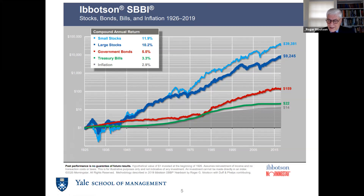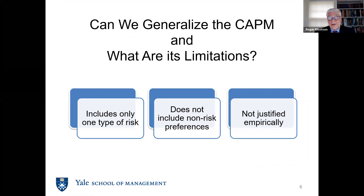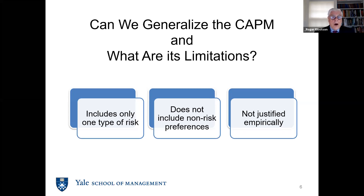So what are the limitations of the CAPM? First of all, it only includes one kind of risk. We could look at more kinds of risk: interest rate risk, default risk, the risk of small cap stocks. It also does not include some non-risk preferences — the one that immediately comes to mind is liquidity, where you really like liquidity. You have a preference for liquidity, a preference to avoid risk, but there are a lot of other preferences that might be important.